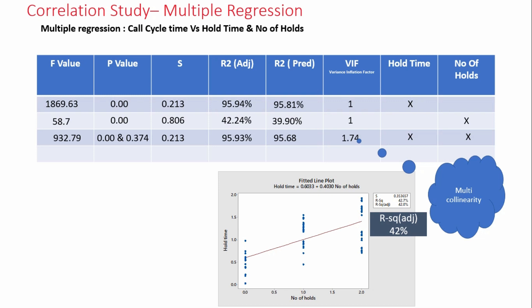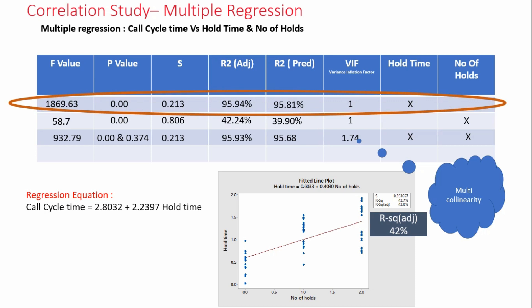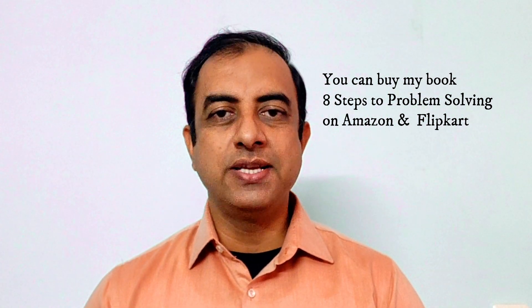If you look at all three models, the best one is model number 1 where hold time is checked against call cycle time. The F-value is the highest, the S-value is the lowest, R-square adjusted and predicted values are the highest, and the VIF factor is 1. So hold time is the best predictor variable for call cycle time. The regression equation is: Call Cycle Time = 2.8032 + 2.2397 × Hold Time. By now you would have understood what is multiple regression, multicollinearity, and what are F-values and S-values and their importance in regression modeling.